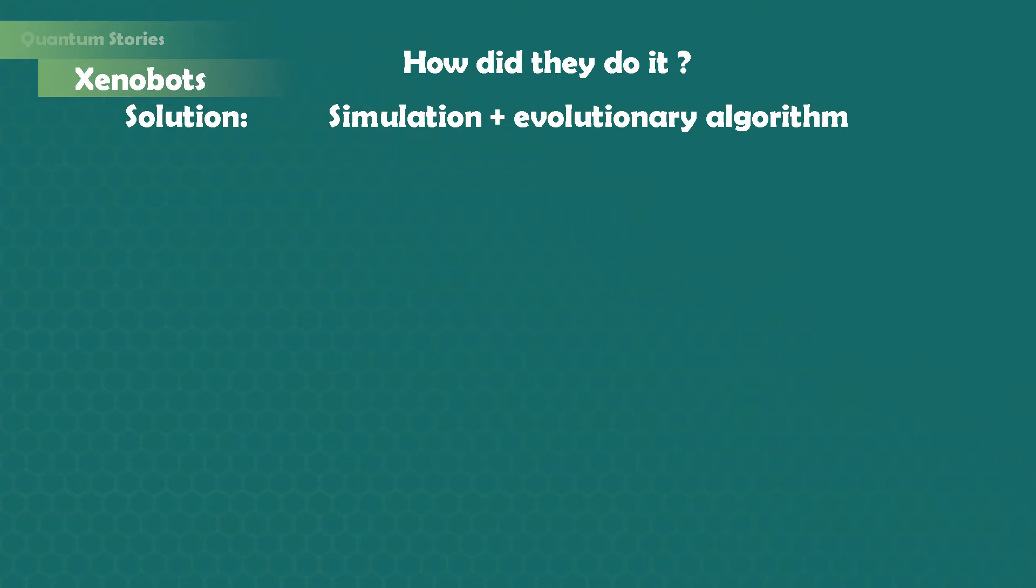Secondly, instead of trying each of these billions of different possibilities of combining these two types of cells, they use what is called an evolutionary algorithm. Now, what is an evolutionary algorithm?